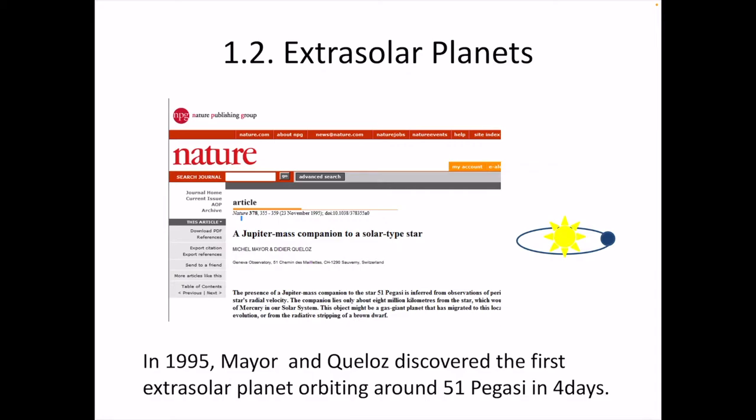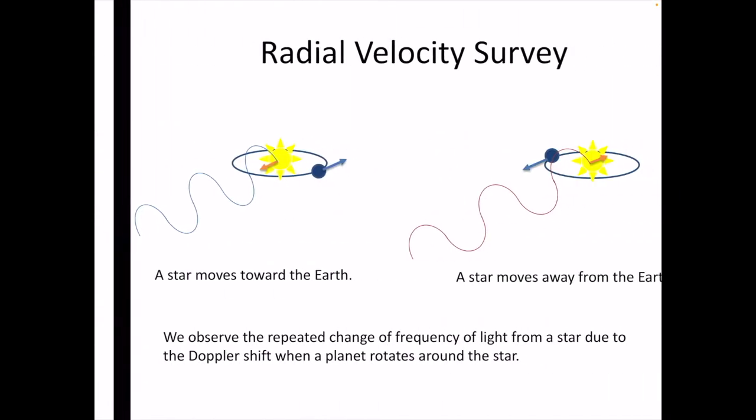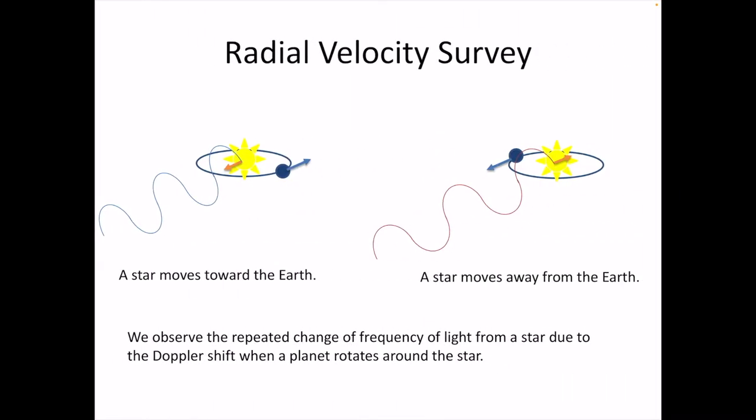The method used to discover the first extrasolar planet is the radial velocity method. A star and a planet rotate around their center of mass. If the planet is moving away from us, then the star is moving toward us. If the planet is moving toward us, the star is moving away from us.